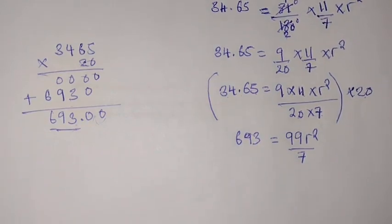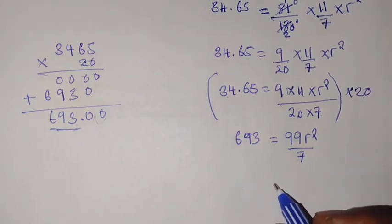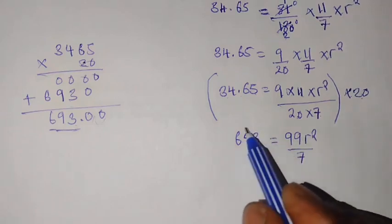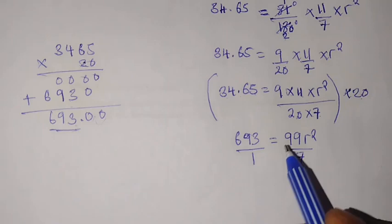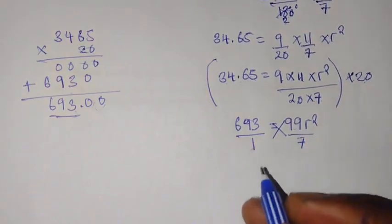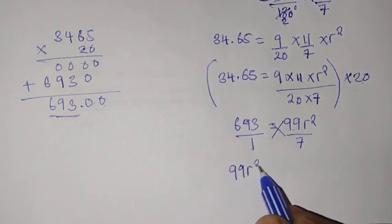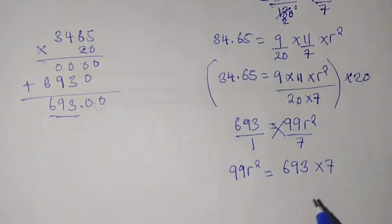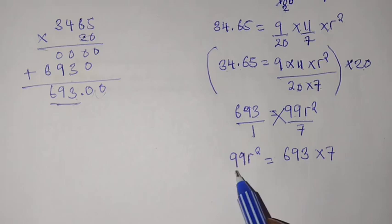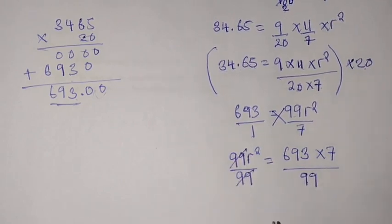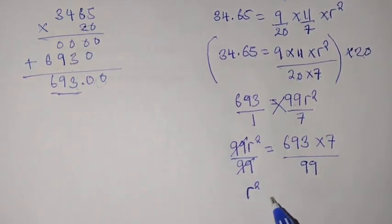From here, it now becomes very easy. We have a fraction here. This is not a fraction, so we are going to divide this by 1. Then we cross multiply. Once we multiply 1 times 99 R squared, you'll get 99 R squared equals 693 times 7. Remember, this is paper 1. We are interested in finding the value of R. We divide with 99. Even this side, we divide with 99. This and this will cancel. You'll remain with R squared equals.